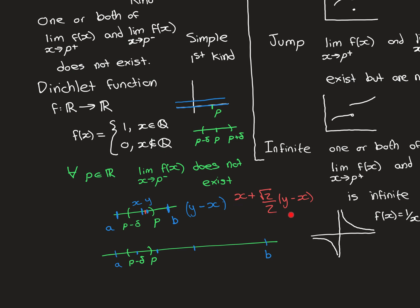To emphasise: if x + (√2/2)(y − x) were rational, we could subtract x from both sides — still rational. Multiply both sides by 2 — still rational. We'd be left with √2 × (y − x) equals a rational number. Dividing through by (y − x), which is rational and non-zero, we'd conclude √2 is rational, which we know it isn't.